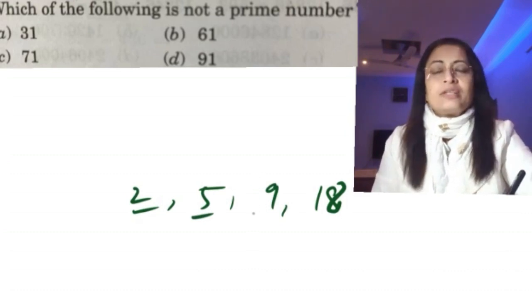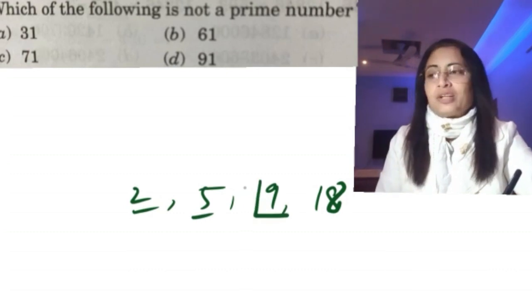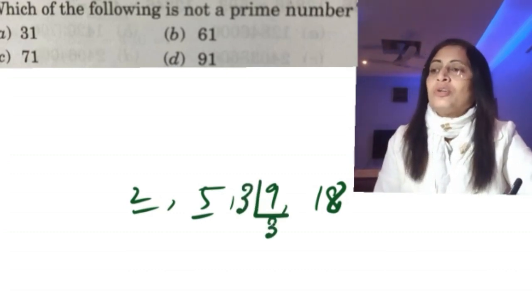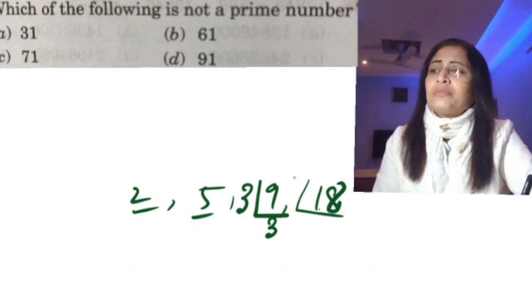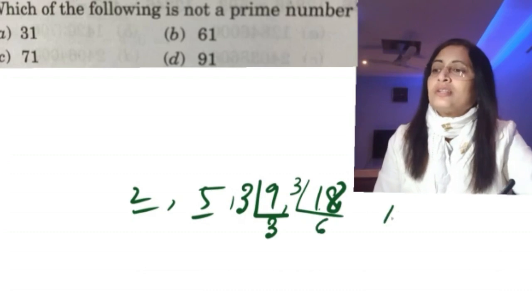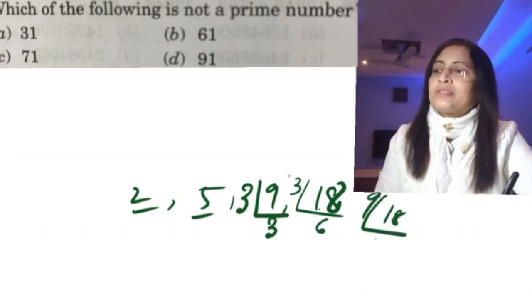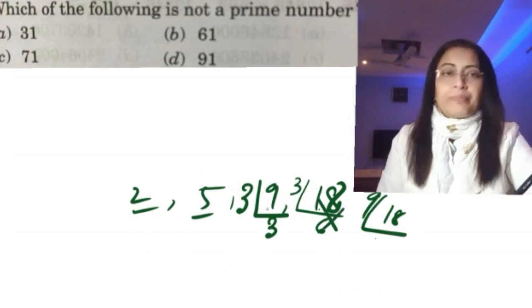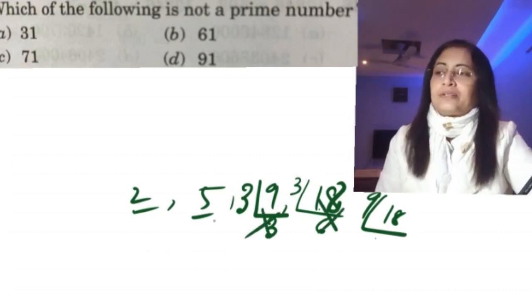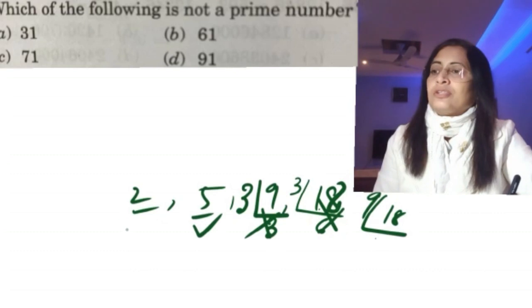For example, 3 is a factor of 9, and in case of 18 also we can divide with 3, and we can divide with 9. So 18 is not a prime number, 9 is not a prime number, but 2 and 5 are prime numbers. In this way you can identify prime numbers.